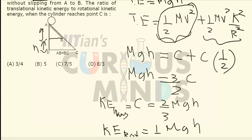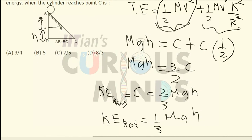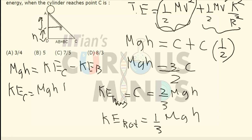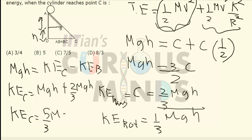After point B, the energy gained will only be translational kinetic energy. So mgh equals the translational kinetic energy at point C minus the kinetic energy at point B. Therefore, kinetic energy at point C equals mgh plus the translational kinetic energy at point B, which was 2/3 mgh, giving kinetic energy at point C equal to 5/3 mgh.